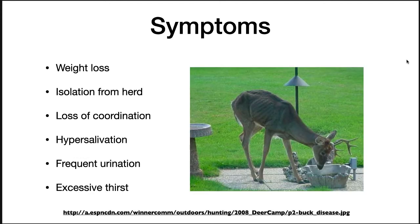The symptoms of this illness are weight loss, isolation from the herd, loss of coordination, hypersalivation, frequent urination, and excessive thirst. This image shows an actual deer suffering from this illness — it is drinking from an ornamental plant decoration very near a window, which is not something a deer would normally do, and it appears to be away from its herd, so it is clearly suffering from this disease.